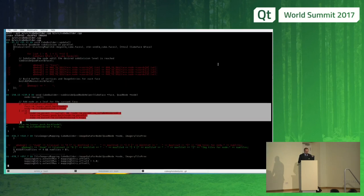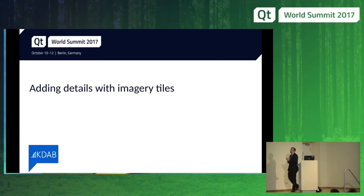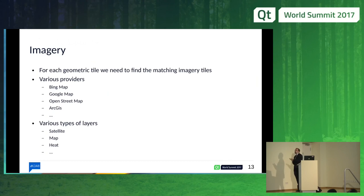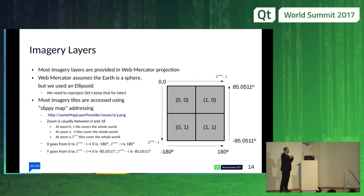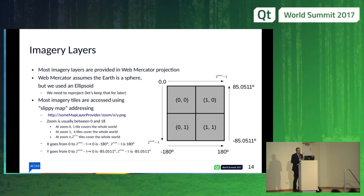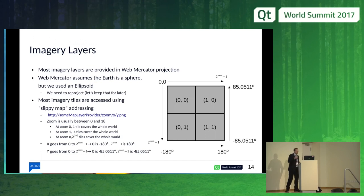That's the part about creating the Earth ellipsoid. Then comes the tricky part — adding textures, images on our globe. There are various providers of images and they provide different types of layers: satellite images, map layers, heat layers to see where places on Earth are hotter, elevation layers, and so on. Image layers usually provide tiles projected in web Mercator projection, which assumes the Earth is a sphere. So that's actually more complex to handle textures now, since we made an ellipsoid. We will have to reproject, but we'll see that later.